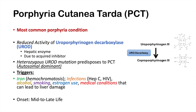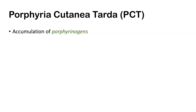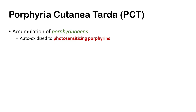The onset of porphyria cutanea tarda generally occurs in mid to late life, and in general, males equal females in incidence. The symptoms and presentation of PCT are due to accumulations of the porphyrinogens — anything before the uroporphyrinogen decarboxylase enzyme in the heme synthesis pathway can begin to accumulate, and these become auto-oxidized to photosensitizing porphyrins.